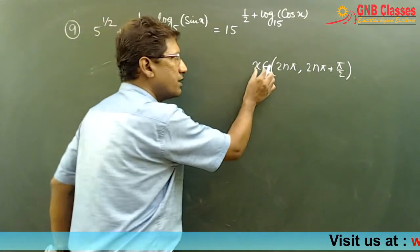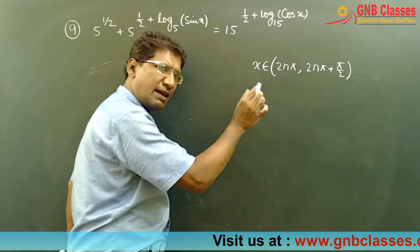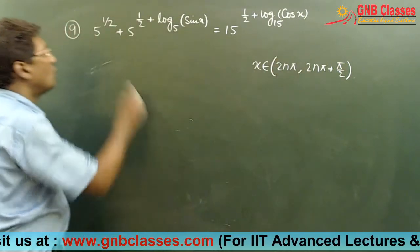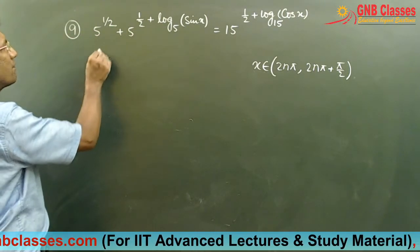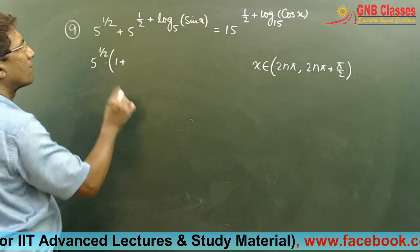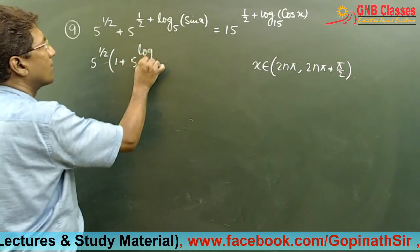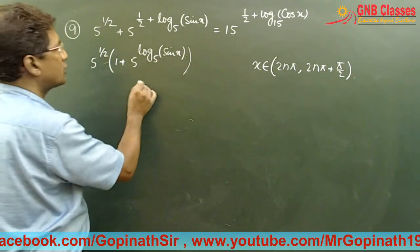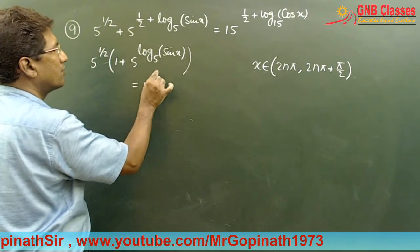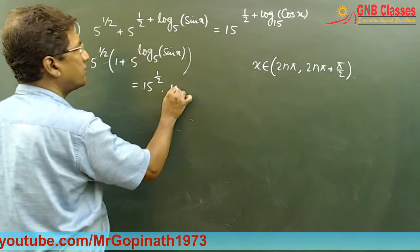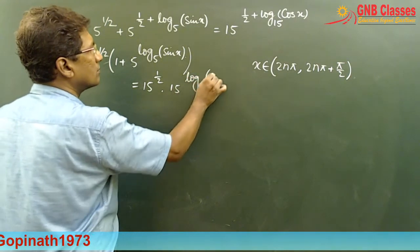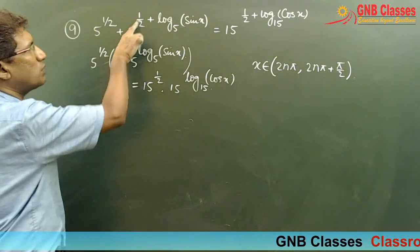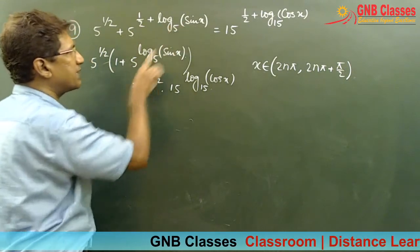Any x within this region we will accept; whatever is not in this range we will reject. Now let us solve. The right-hand side can be written as 15 to the power half into 15 to the power log cos x base 15.